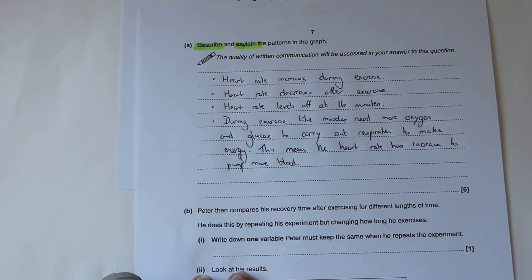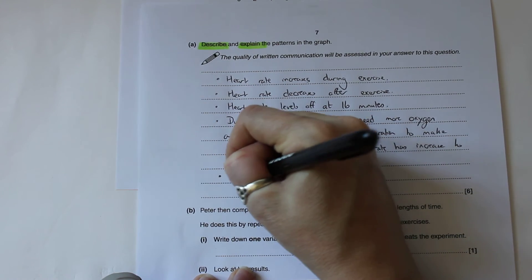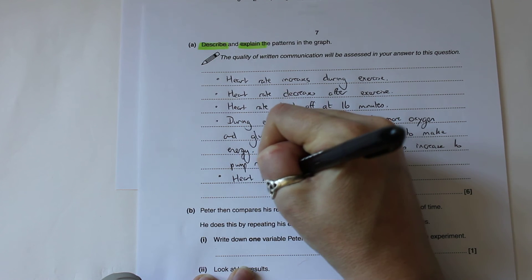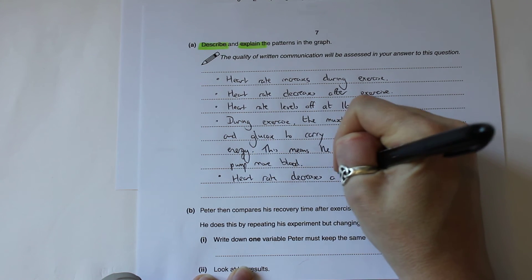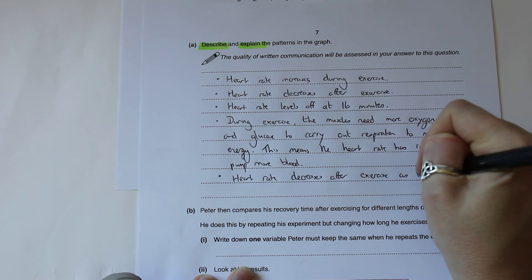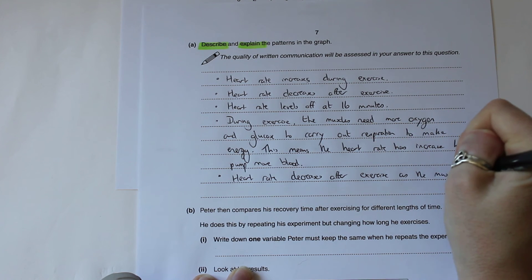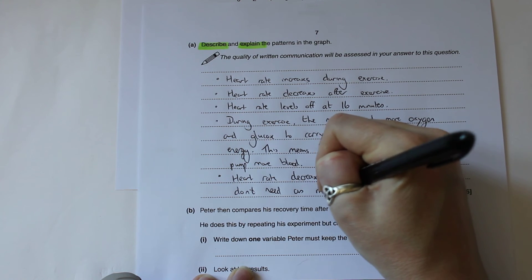That's explained the increase. As for why it decreases, all we need to say is heart rate decreases after exercise as the muscles don't need as much energy.